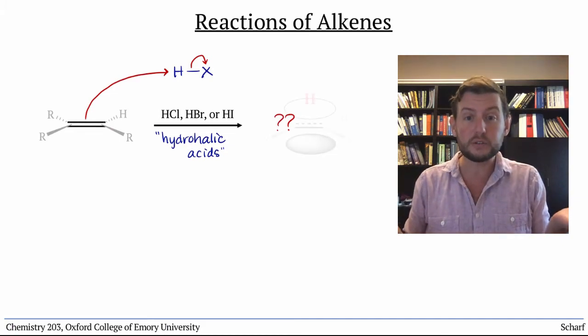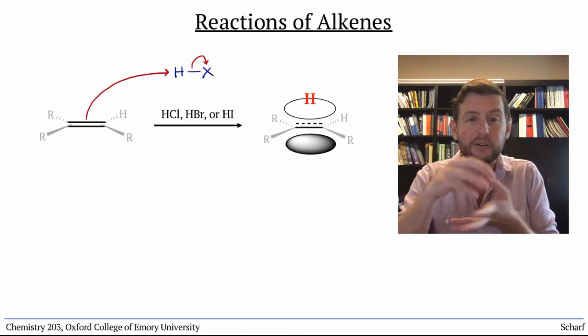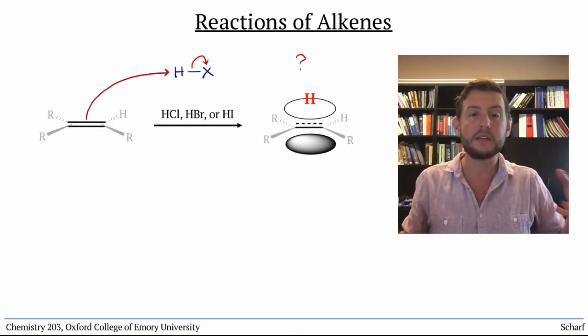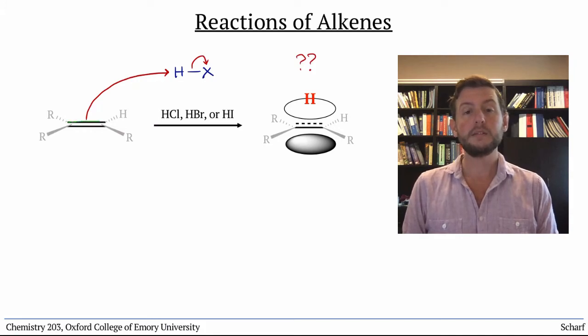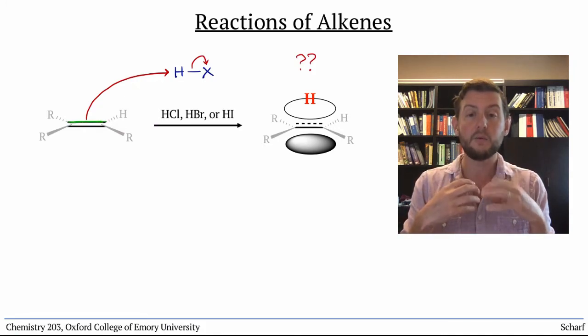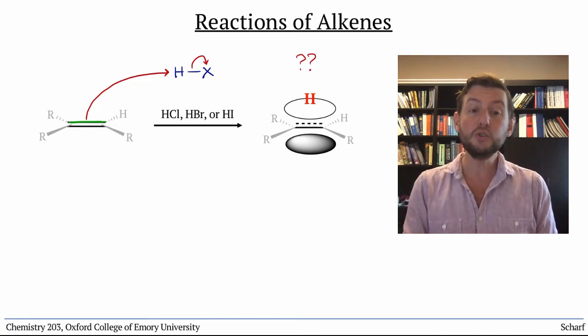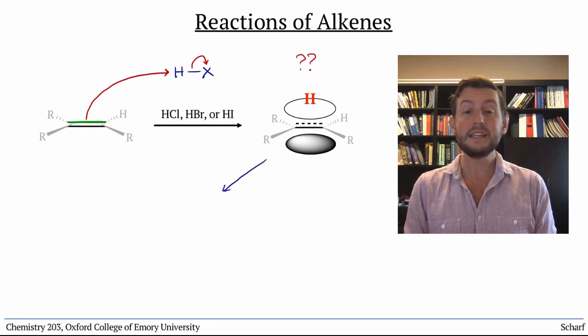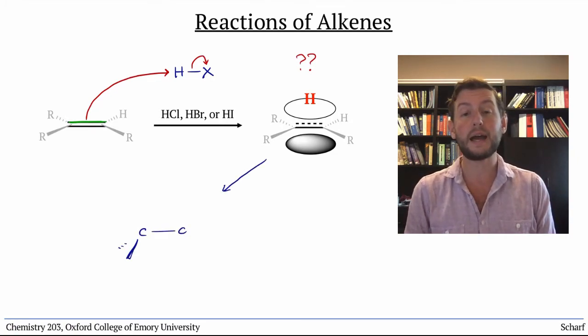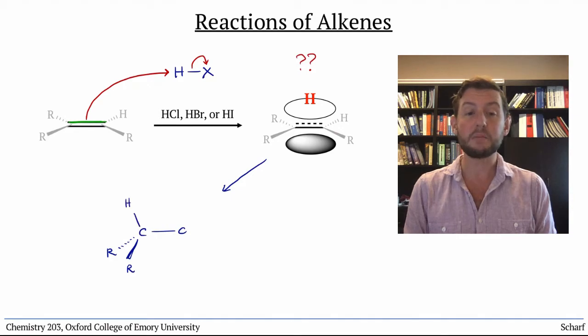What does it bond to? It doesn't just hang out halfway between the two carbons, it needs to choose one. So, let's examine the two possibilities. Because this reaction takes the electrons out of pi cc, we break the pi bond and use those electrons to make a new sigma bond to H.